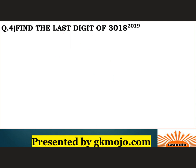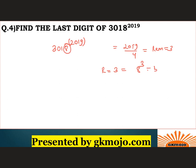Find the last digit of 3018 to the power 2019. Using the rule, divide the power 2019 by 4 — you will find the remainder is 3. When the remainder is 3, take the unit digit which is 8 and raise it to the power 3. 8 to the power 3 is 512, so the last digit is 2. Hence the last digit of this complete expression is 2.